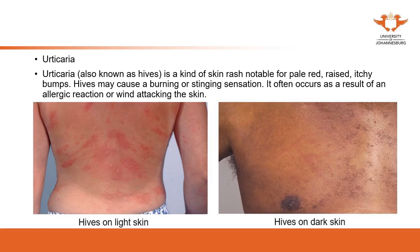Urticaria, also known as hives, is a kind of skin rash. Here are two images of hives in different skin colors. It can occur as a result of an allergic reaction or wind attack on the skin. For skin problems we always think about wind, because the development migrates from one area to another, or develops and becomes bigger and bigger — that also indicates wind because the areas change.